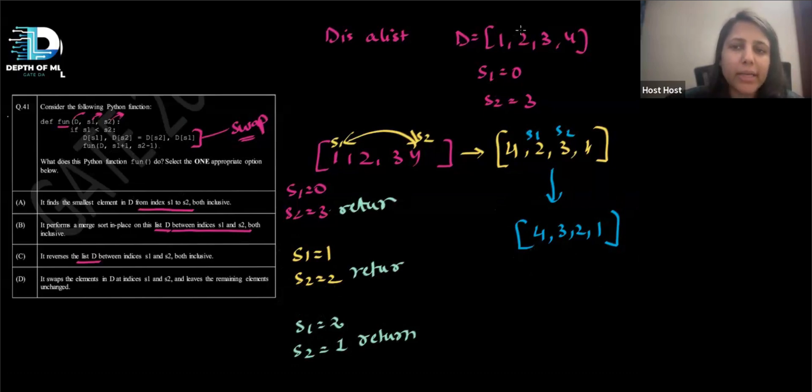So you can see that I had list 1, 2, 3, 4. Now it has become 4, 3, 2, 1. So what has this done? So this has reversed the list, reversed the list between S1 and S2.